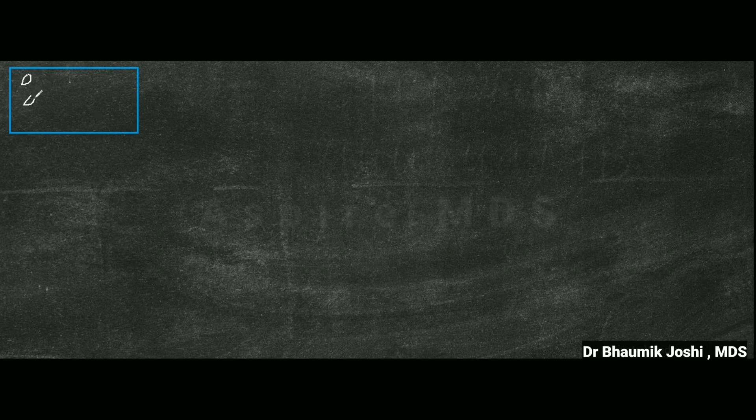Hello everyone, I am Dr. Bahamik Joshi from Aspire MDS. In this video we will see how the latent image and the radiographic image is formed on the x-ray film. If you see the structure of the x-ray film, you can see presence of multiple silver halide granules present on the film.